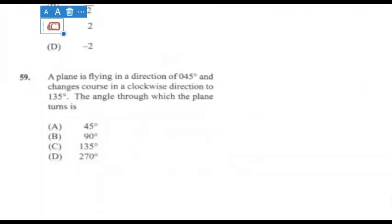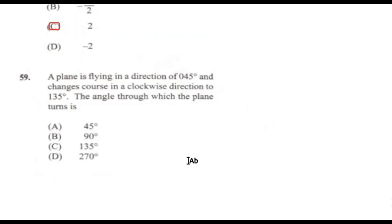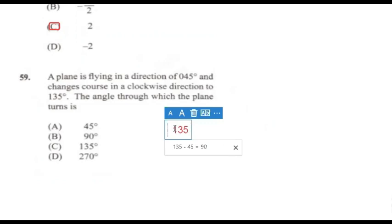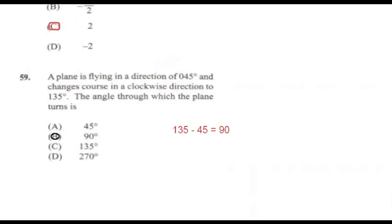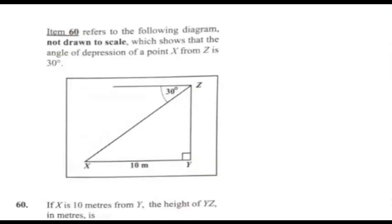Question 59: A plane is flying in a direction of 45° and changes course clockwise to 135°. The angle through which the plane turns is 135 − 45 = 90°. It moves from the 45° direction to the 135° direction, so the plane turns through 90°.